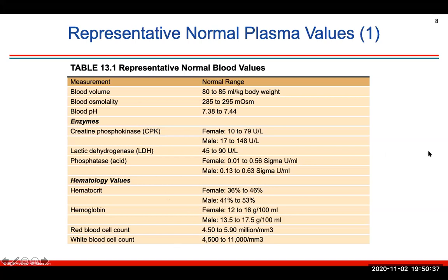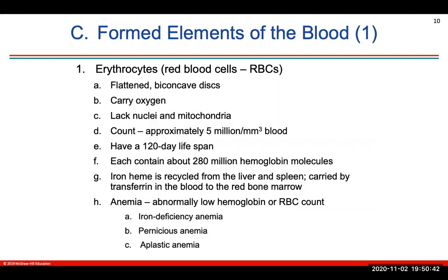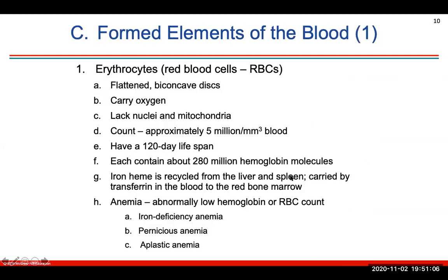You'll want to focus on the levels of hormones, ions, and other organic molecules in that chart for the lab. Erythrocytes are flattened biconcave red blood cell discs that carry oxygen in the hemoglobin molecule. Each red blood cell contains about 280 million hemoglobin molecules. Hemoglobin numbers are important because they determine your oxygen capacity and oxygen-carrying ability in your red blood cells.